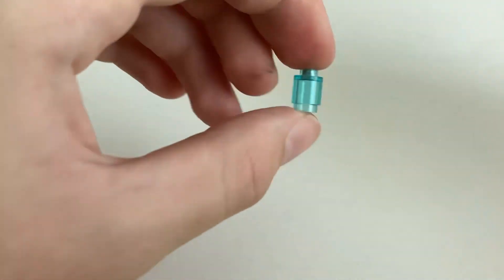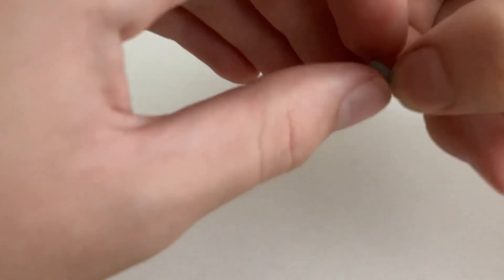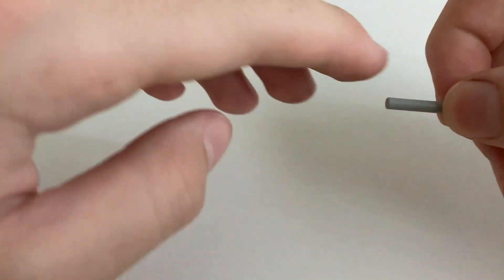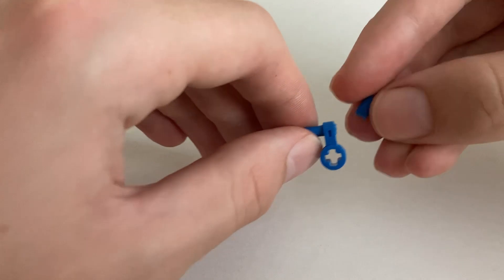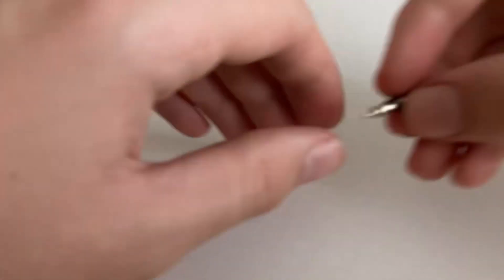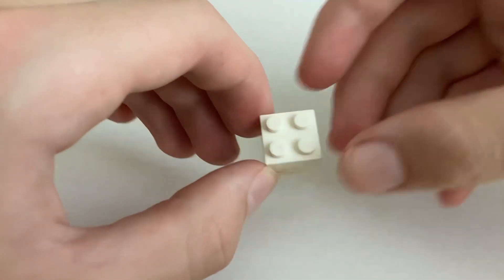One of these rounded LEGO pieces like this, any size of these bars so you can cut them, and one of these pieces which will also be cut like this, a tire core valve, and a 2x2 LEGO brick.